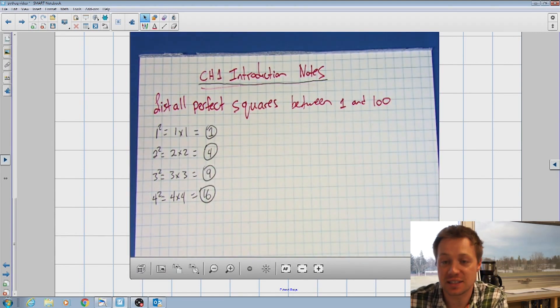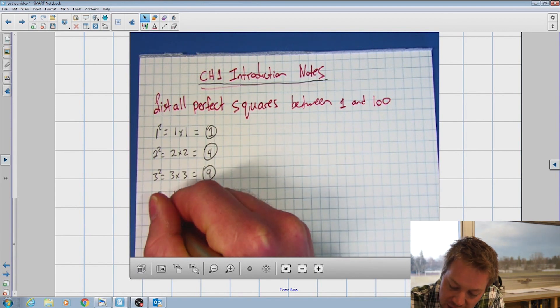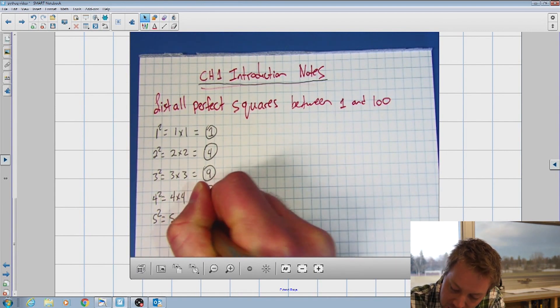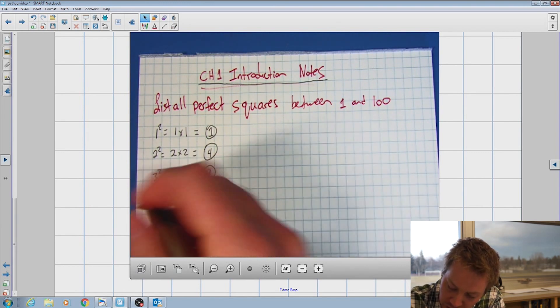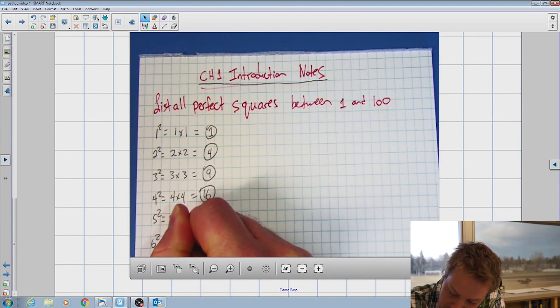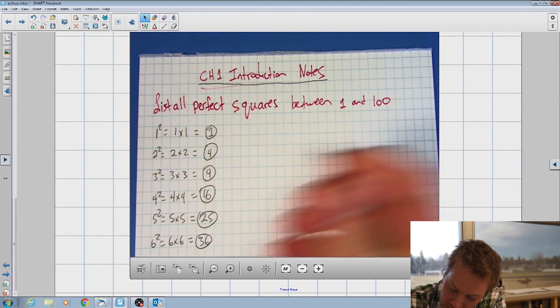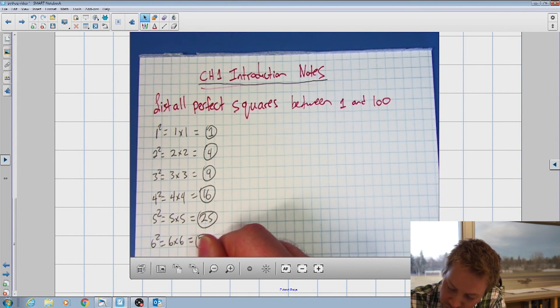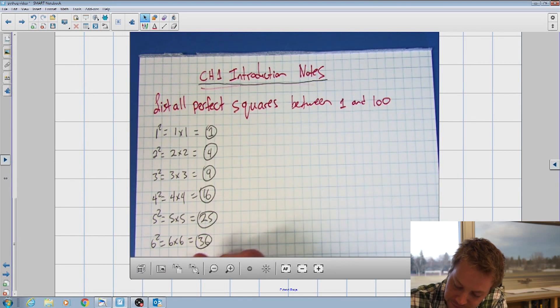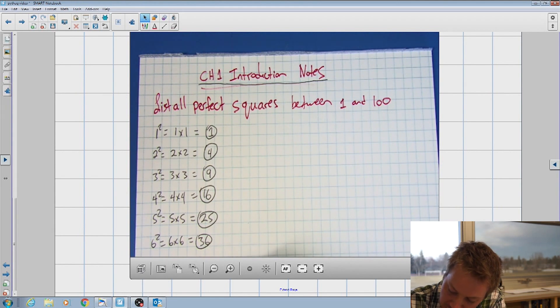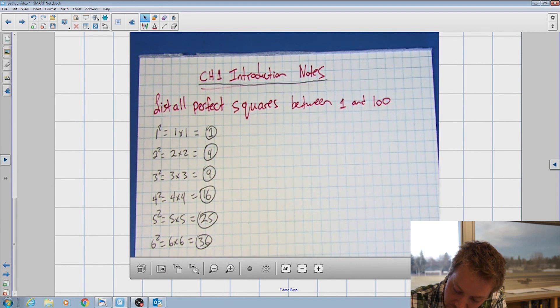Then we've got five squared equals five times five, that equals 25. Six squared is six times six, the next perfect square is 36. We've got seven squared is seven times seven, that perfect square is 49. Eight squared is eight times eight, that equals 64. Nine squared is nine times nine, that equals 81. And we've got 10 squared, which is 10 times 10 for 100.